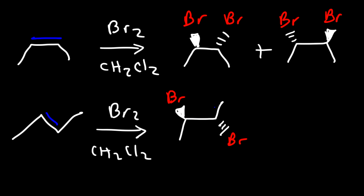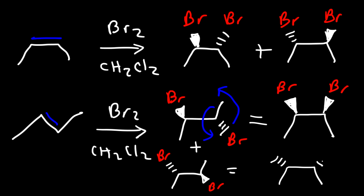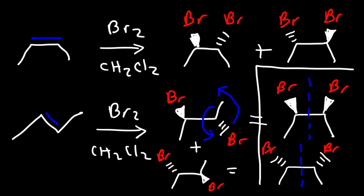I'm going to rotate this bond 180 degrees, so now it looks like this. Since I rotated the methyl group, the bromine atom that was going into the page has to rotate 180 degrees out of the page, so now it's on the wedge. Therefore these two structures are equivalent to each other. Drawing the other product, it is also equivalent to its counterpart. Notice that these two products are meso compounds — they have an internal plane of symmetry — so these two compounds are identical.